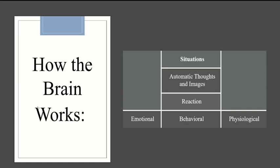I want to explain how the brain and mental health work as a whole. Situations happen — that's inevitable. But then there are automatic thoughts and images that come along with those situations, and then there are reactions, which are emotional, behavioral, or physiological. If you neutralize the thoughts and images before the reaction, it doesn't get to the reaction. Because once you already have the automatic thoughts and images, it's really difficult to stop the reaction.